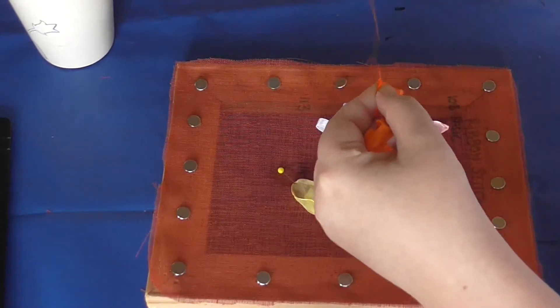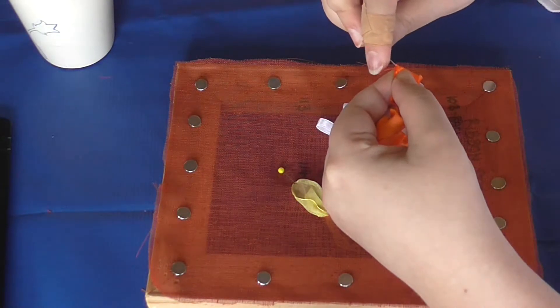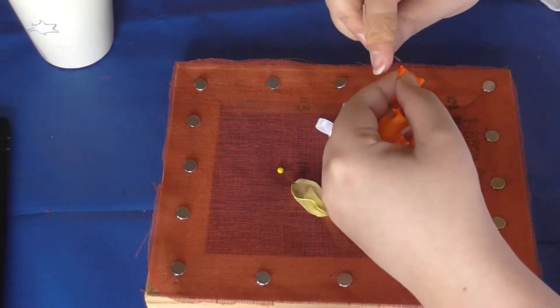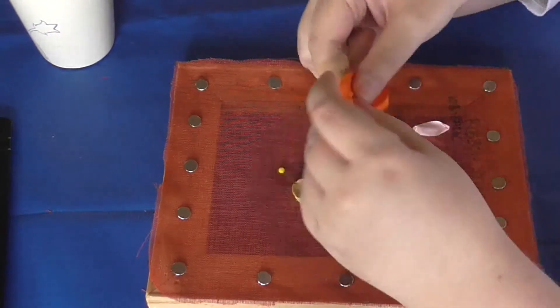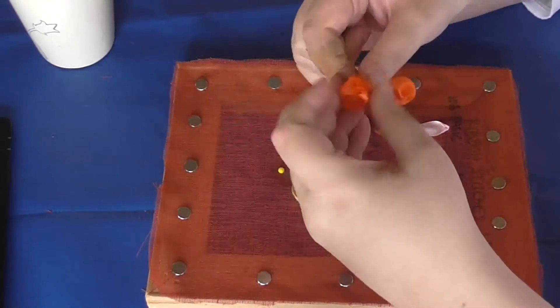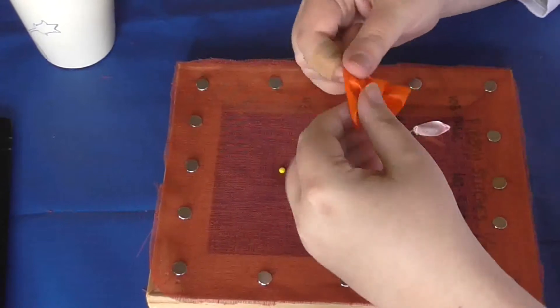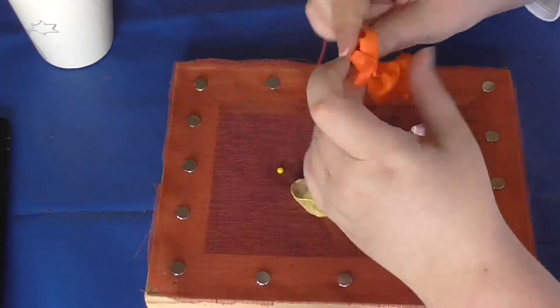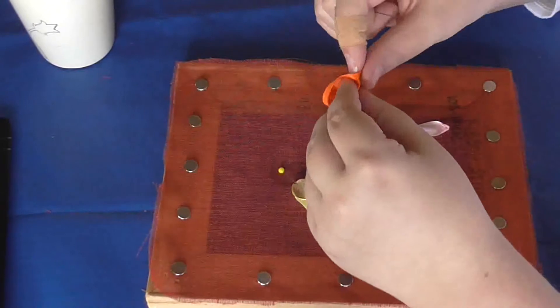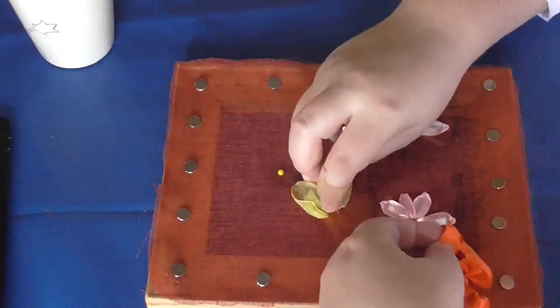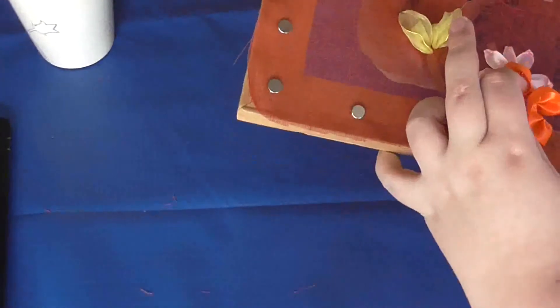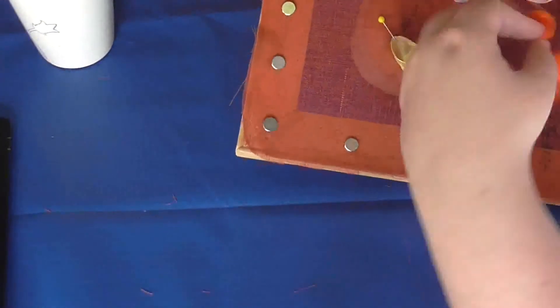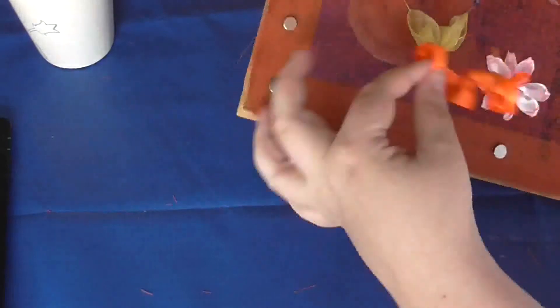Just kind of finesse your gather slightly so it doesn't look too messy. Starting from this end, start stitching in the center here, hopefully not catching anything else in the process.